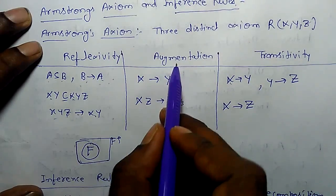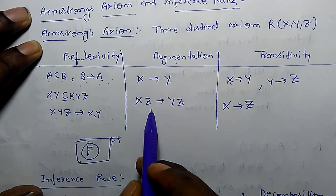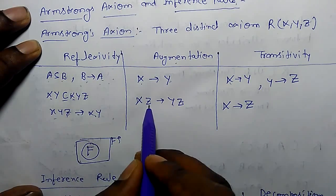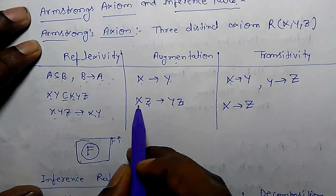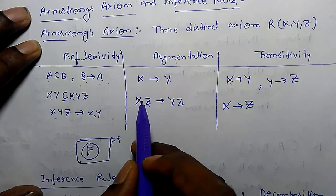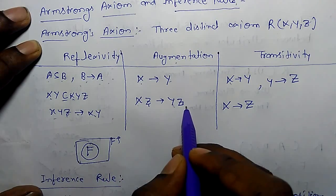In the augmentation rule, if x functionally determines y, we can add one extra attribute on both sides. The attribute on the left is augmented, so now it is x, z functionally determines y, z.